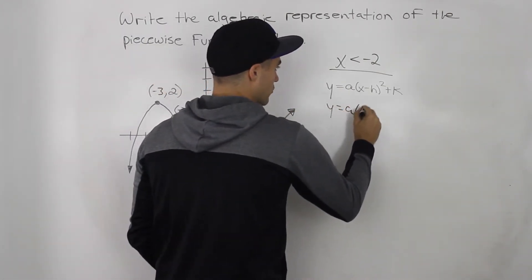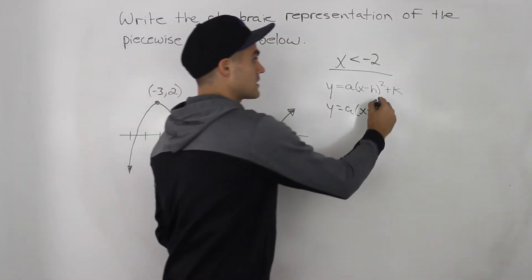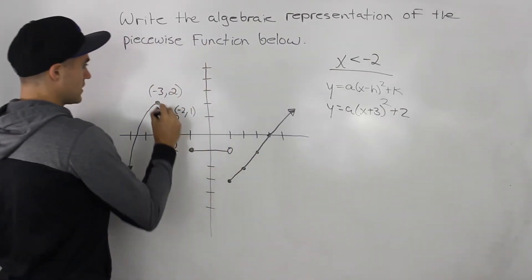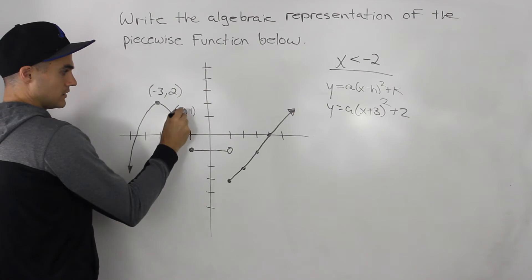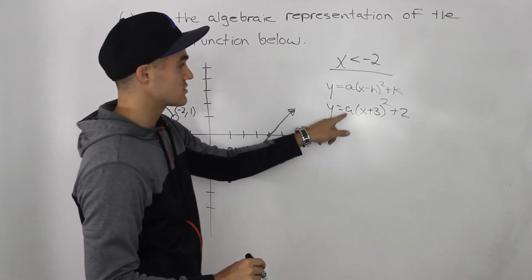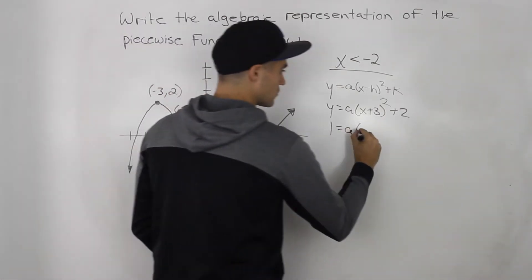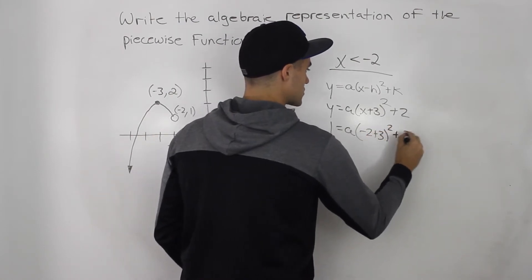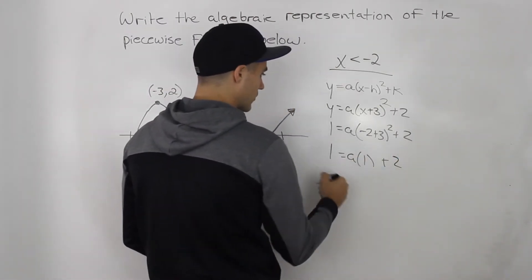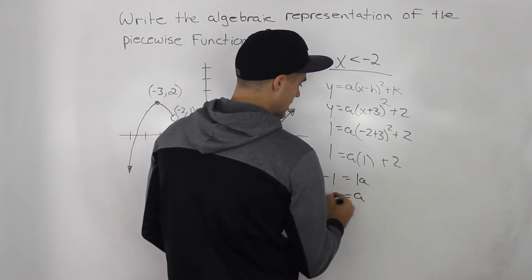We would have y equals a times (x plus three) squared plus two — the h value is negative three, so x minus negative three turns into plus three, and the plus k gives us plus two. Now we use the point negative two and one, plugging it in for x and y to solve for a. So y equals one, and a times (negative two plus three) squared plus two gives us a times one squared plus two. So one minus two is negative one, meaning a equals negative one.